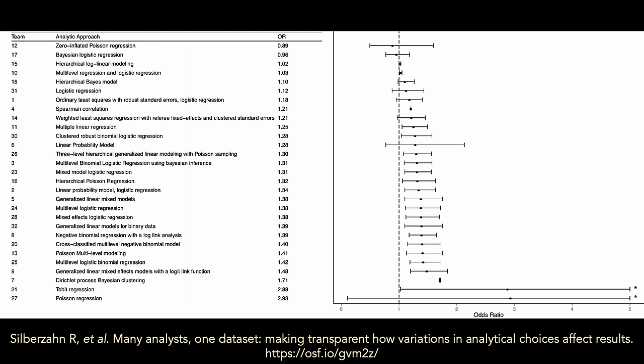So, unsurprisingly, the estimates of the effect of the player's skin color on the likelihood that he'll receive a red card were kind of all over the place. 40% of groups found a statistically significant result, but 60% got a non-significant result. Most groups got an odds ratio of around 1.2 to 1.4, meaning that darker-skinned players would be 20 to 40% more likely to get red carded, but a couple of groups got an odds ratio point estimate that would suggest that these players were actually less likely to get penalized. And a couple of groups actually came up with odds ratios in the 2.8 to 2.9 range. And again, these are all professional statisticians and researchers using the same data set.